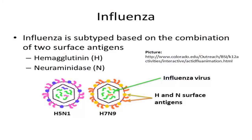Influenza viruses, regardless of what species they may infect, are subtyped based on the antigens found on the surface of the virus. There are two different types of surface antigens: the hemagglutinin antigen, commonly referred to as H, and the neuraminidase antigen, commonly referred to as N. There are 18 H antigens and 11 N antigens, and many different combinations of these antigens are possible. The combination of the H and N antigens is what gives the virus its subtype name.